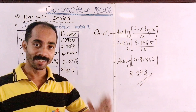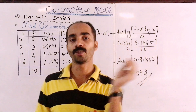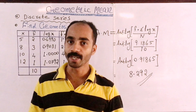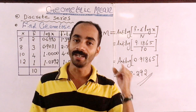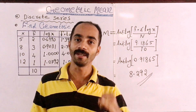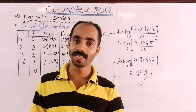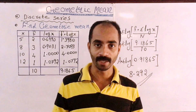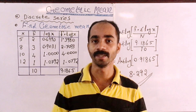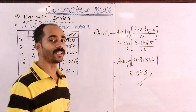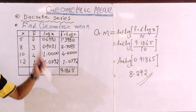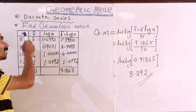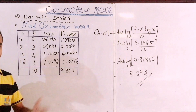We've been studying statistics, covering the introduction and arithmetic mean, the median, and we've done a lot of geometry. So now we have a discrete series, and there are X values — for example, 5.